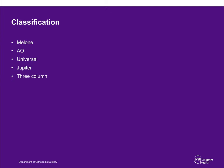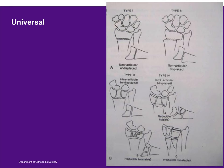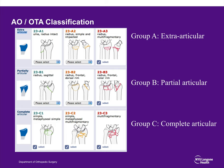Multiple classification schemes have been proposed. The Melone classification looks at four constant fragments: the radial styloid, dorsal ulnar, volar ulnar, and shaft. Type 3 is associated with a spike of bone and median nerve injury. The universal classification is descriptive, covering non-articular undisplaced and displaced fractures, and articular fractures that are non-displaced versus displaced and reducible versus irreducible. Most studies present the AO/OTA classification: group A extra-articular, group B partial-articular, and group C complete-articular fractures. For the distal radius, group B includes shear fractures such as volar Barton or radial styloid fractures.